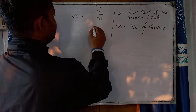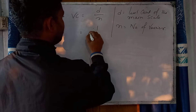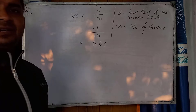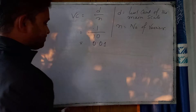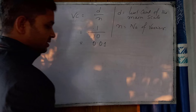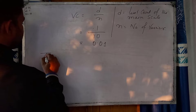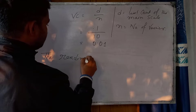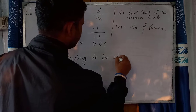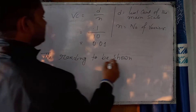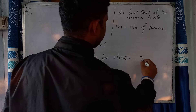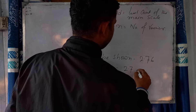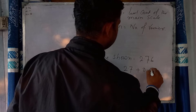So we calculate: D equals 0.1, N equals 10, so VC equals 0.01. Now we need to show the reading. The reading is 2.76, which equals 2.7 plus 0.06.